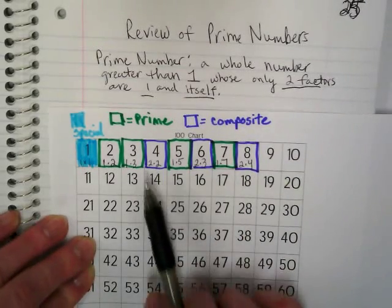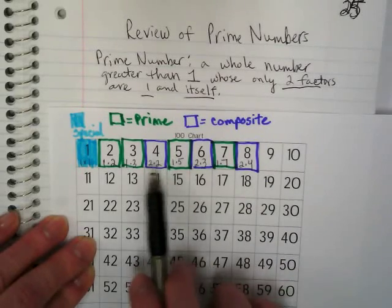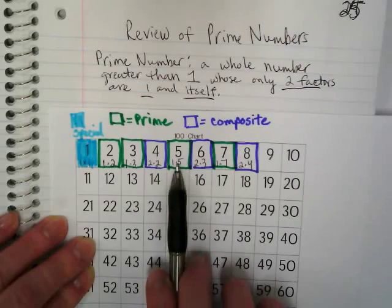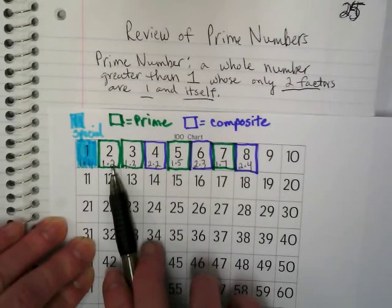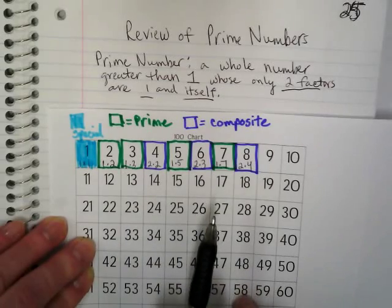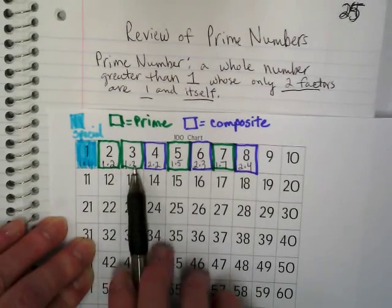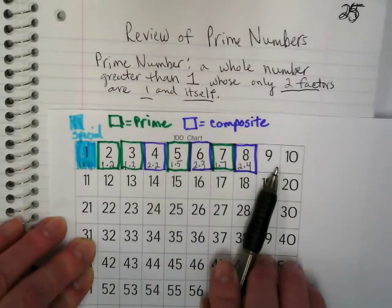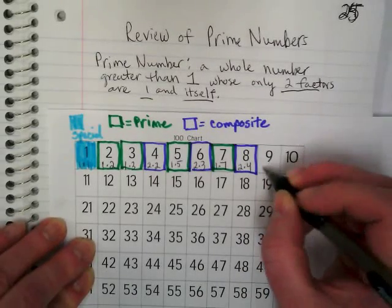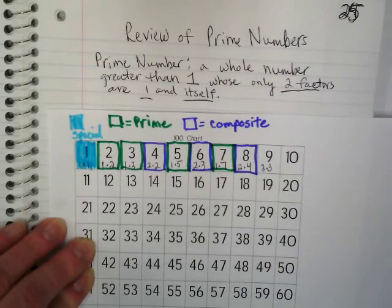Here's where people start to think that only odd numbers are prime, because we've got seven, five, and three — but two is even. So it doesn't mean that all odd numbers are prime. Two is an even number. Now we're getting to nine, and it's odd, so people tend to want to make it prime — but it's actually composite, because we can do three times three and one times nine.